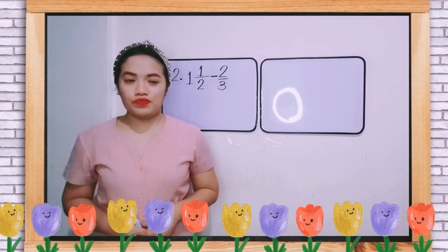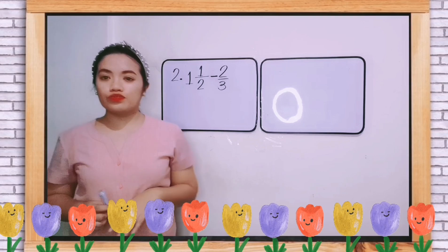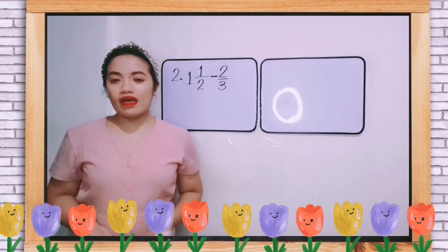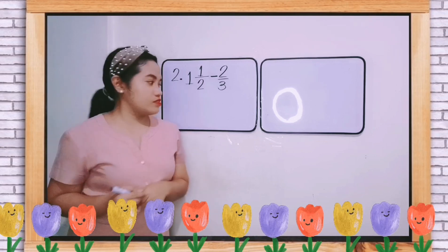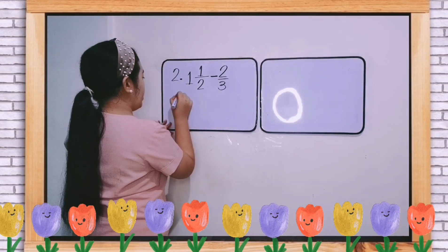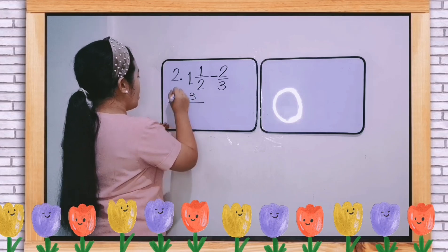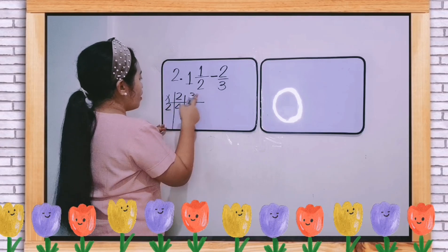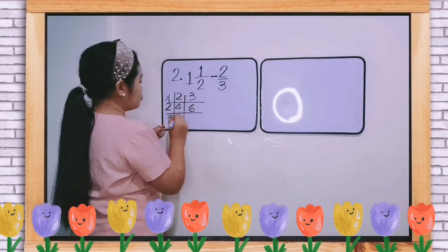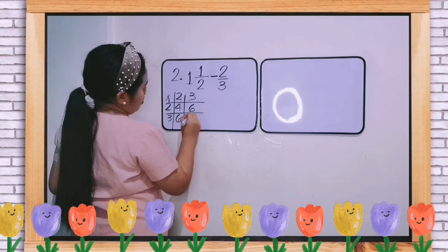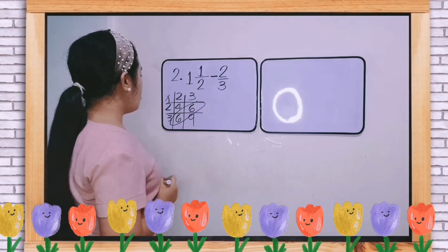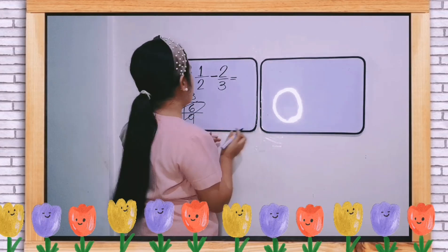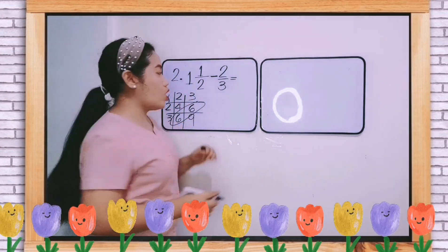Let us proceed to our example number 2, which is 1 and 1 half minus 2 thirds. As you can see, we still have different denominators. So let us get the LCD first before subtracting. Let us write a table. 2 and 3, and then we will multiply this by the counting numbers. 2 times 2 is 4. 2 times 3 is 6. 3 times 2 is 6. 3 times 3 is 9. So the common denominator or the common multiple of 2 and 3 is 6.